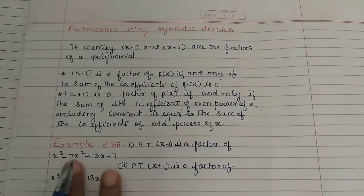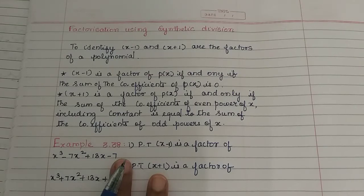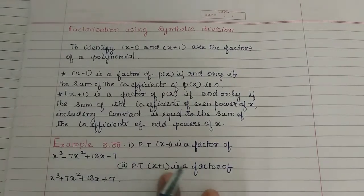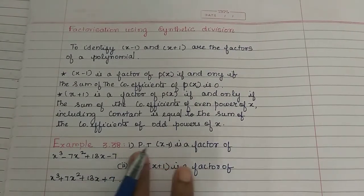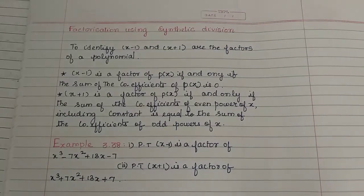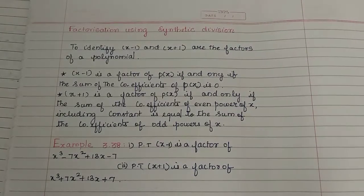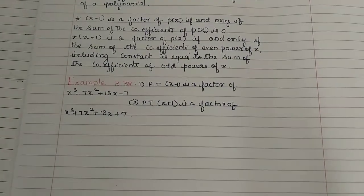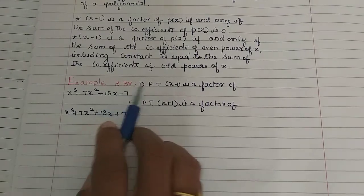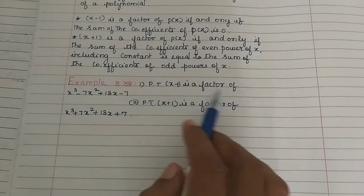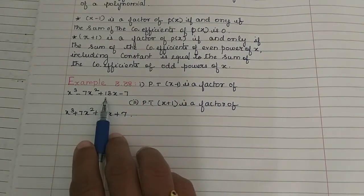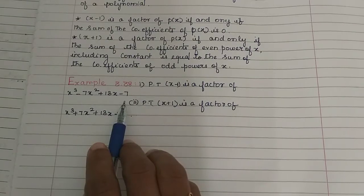So, if we add the coefficients and they sum to 0, we can divide the polynomial by x minus 1. For example 3.38: prove that x minus 1 is a factor of x³ minus 7x² plus 13x minus 7.